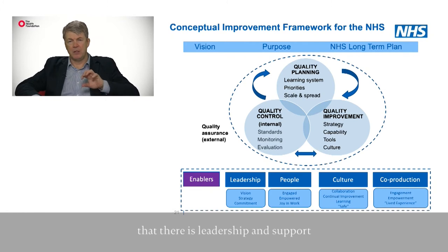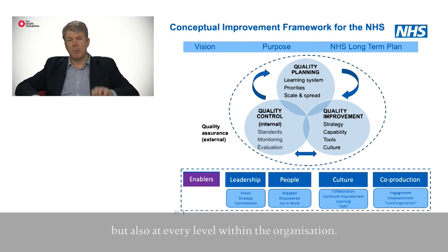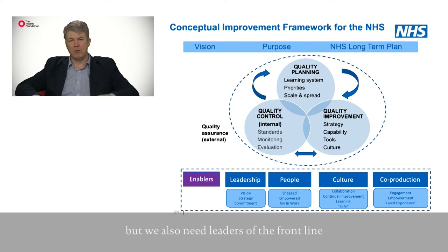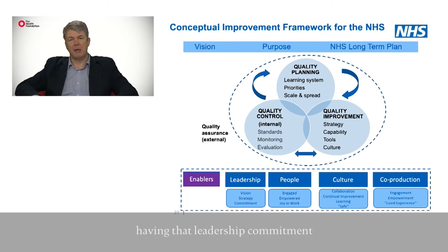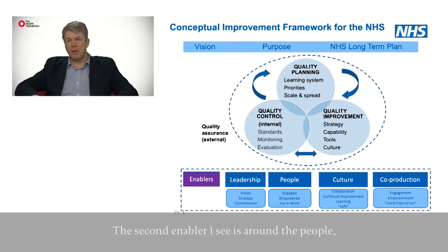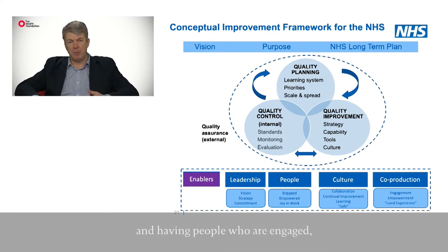For a quality improvement approach to be successful, there needs to be leadership and support at the top of the organisation, but also at every level within the organisation. We need the board level support, but we also need leaders at the frontline to buy in. So having that vision, having the strategy, having that leadership commitment is really important. The second enabler I would see is around the people — having people who are engaged, empowered, who have a joy in doing this work and are committed to it.